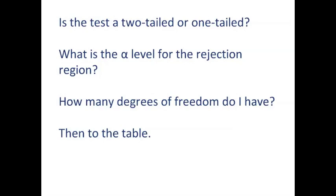Is this a two-tailed or a one-tailed test? What is the alpha level for the rejection region? How many degrees of freedom do I have? Remember, in a small sample, degrees of freedom equals the number in the sample minus 1, or DF = N − 1. Then, after you've answered these questions, go to the table.